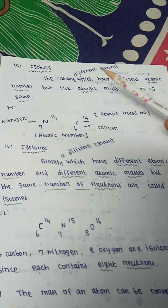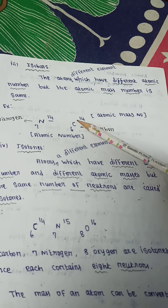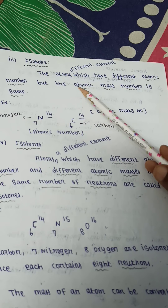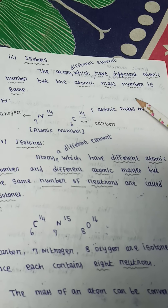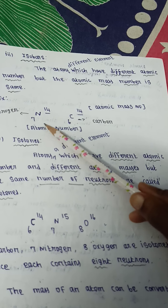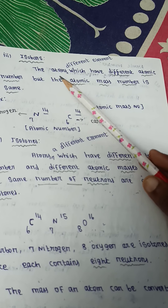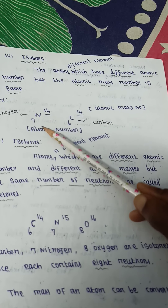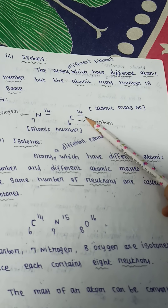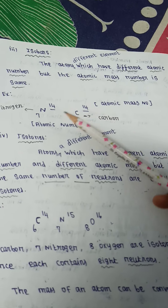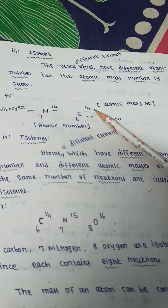Next, let us see isobar. Isobar: atoms of different elements which have different atomic numbers but the same atomic mass number. Isobar is defined as atoms of different elements with different atomic number and same mass number. For example, 7N14 and 6C14.